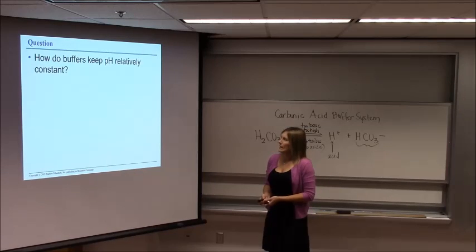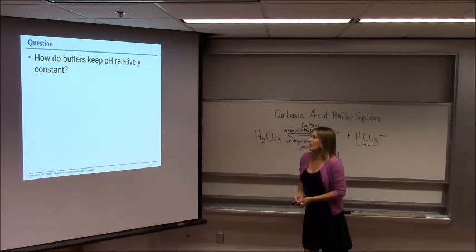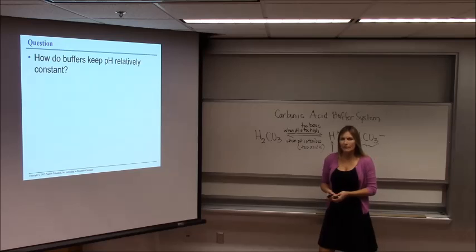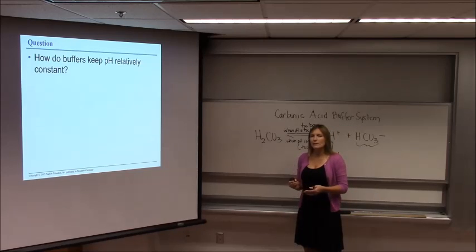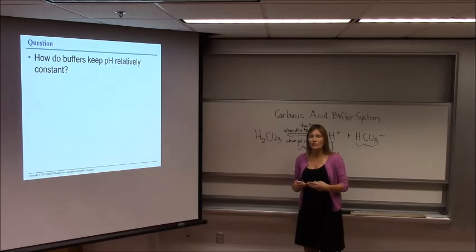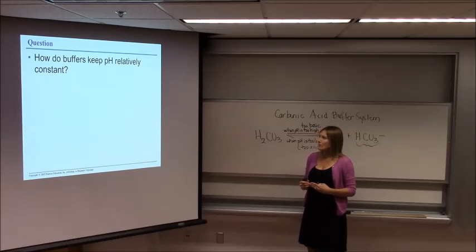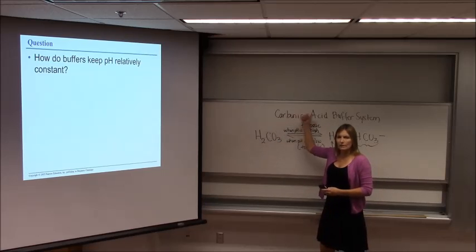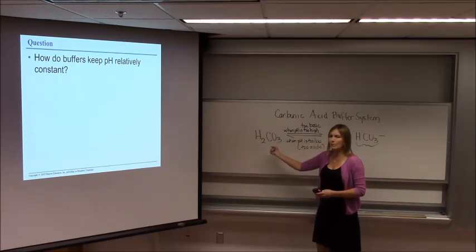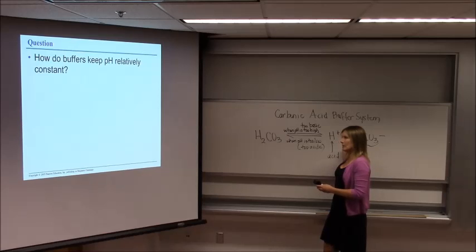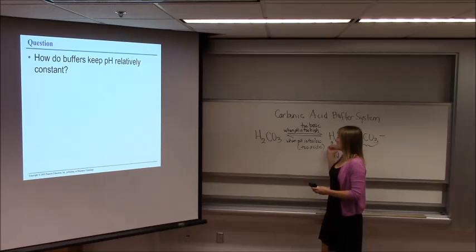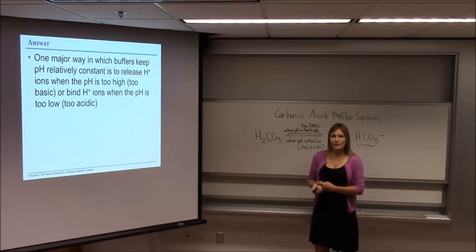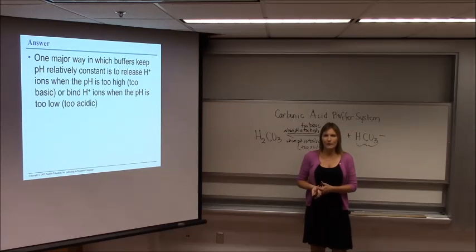How do buffers keep pH relatively constant? Remember, buffers are not trying to keep pH at 7. In fact, if your blood gets to pH 7, that's way too acidic. We want it to stay normal, whatever normal is for that environment. So how do buffers keep pH relatively constant? By being able to shift in one direction or the other to either release hydrogen ions or tie them up. Releasing them to make it more acidic when the pH gets too high, tying them up when the pH gets too low. If you have any questions about that, please rewind the video and watch that part again.